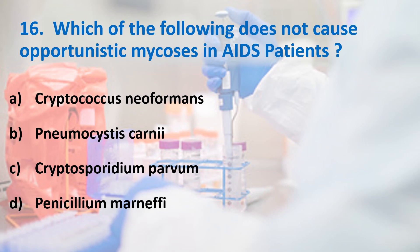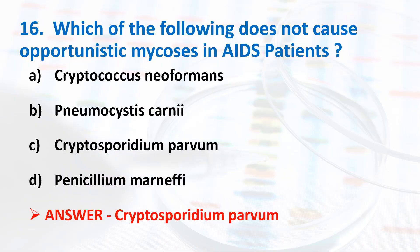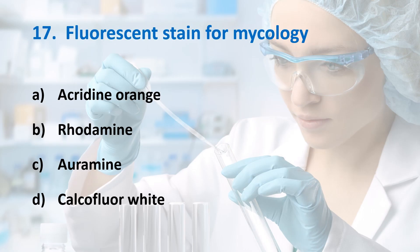Sixteenth question: Which of the following does not cause opportunistic mycoses in AIDS patients? Options: Cryptococcus neoformans, Pneumocystis carinii, Cryptosporidium parvum, Penicillium marneffei. Answer is Cryptosporidium parvum, because it is a parasite, not a fungus. The others are fungi.